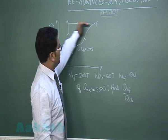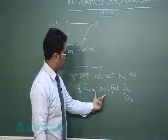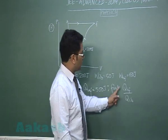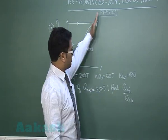Work done in process AF has been given as 200 joule, in process IB 50, and in process BF 100. Q_IAF has also been given as 500 joule and we have to find the ratio of heat in process BF to IB.